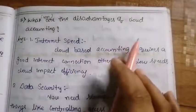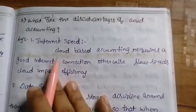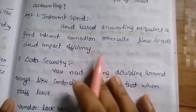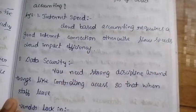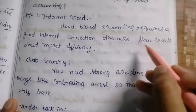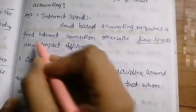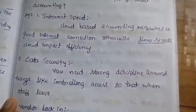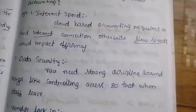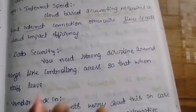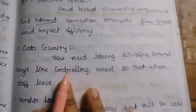What are the disadvantages of cloud accounting? First is internet speed: sometimes the connection is slow due to weather or other factors, causing reduced internet speed. Second is data security: controlling access to cloud data can be a concern.